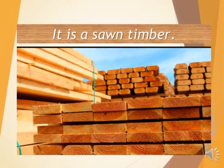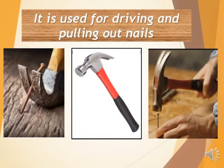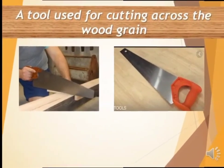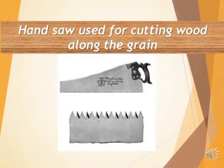Now, it is a sawn timber — what do you call this material? Yes, timber. Now, it is used for driving and pulling out nails — this is called? Yes, a hammer, or a claw hammer. Next, a tool used for cutting across the wood grain — what do you call this tool? Very good! Cross cut saw.